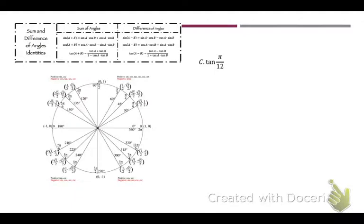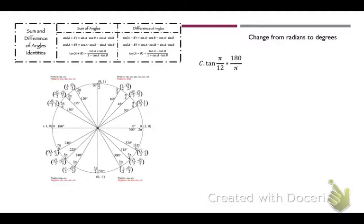Okay, let's do another one. We're given tangent of π/12. Some people would make you do this in radians — I'm not going to. Let's change it to degrees because degrees are easier to work with. Multiply by 180 over π and you get tangent of 15.